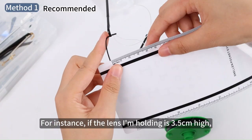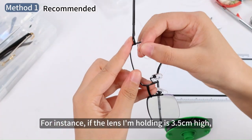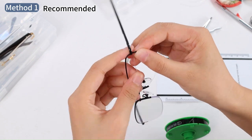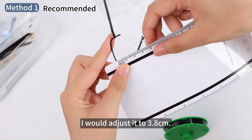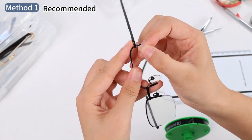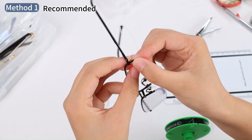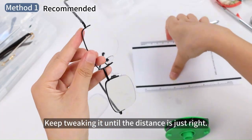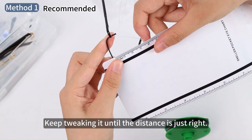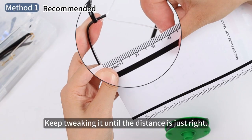For instance, if the lens I'm holding is 3.5cm high, I would adjust it to 3.8cm. Keep tweaking it until the distance is just right. I've got the cord in the right position now.